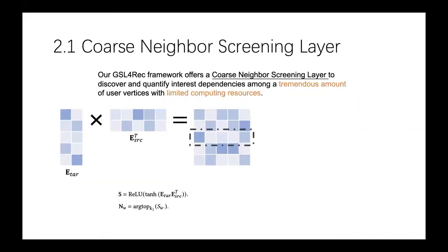Our framework offers a coarse neighbor screening layer to discover interest dependency among a large number of user vertices. To achieve this with limited computing resources, we randomly initialize two learnable parameter matrices to represent the target and the source node embedding. By multiplying them, we can obtain the first stage similarity matrix. For each user, we select the top k capabilities with the highest probability as the coarse neighbors.